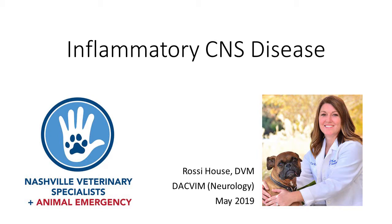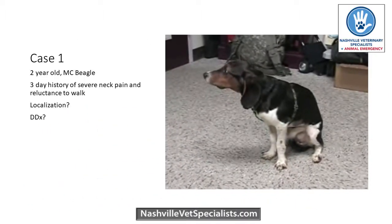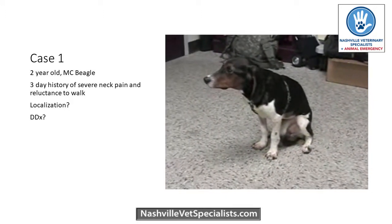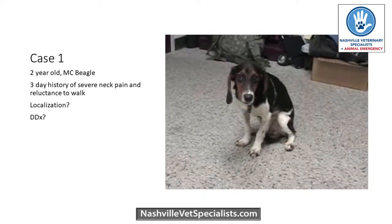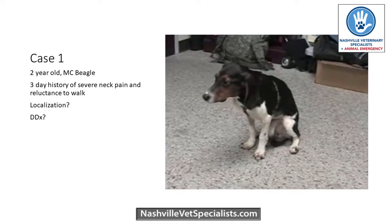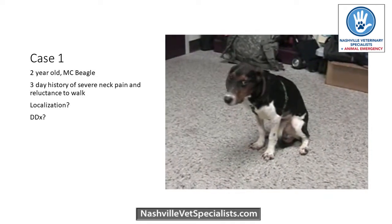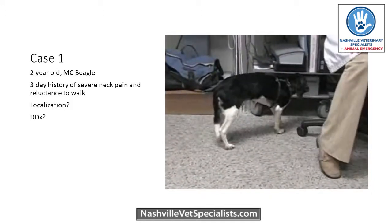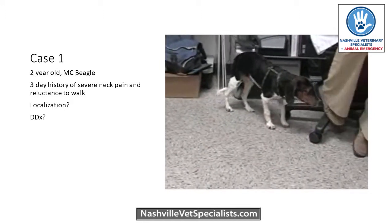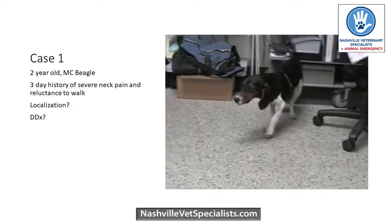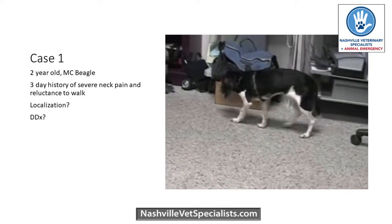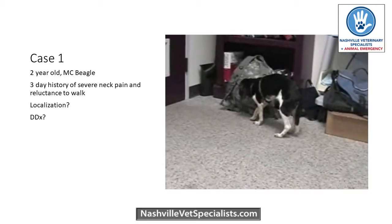Thank you for coming. This is a two-year-old beagle with a three-day history of neck pain and reluctance to walk. As you watch this video, think about where you would localize this lesion, just from observation. And based on where you think the lesion localization is, what sort of differentials would you think about? One of the things I really like about neurology is we can often get a pretty good idea of where this patient's lesion is just by watching them walk around the exam room.